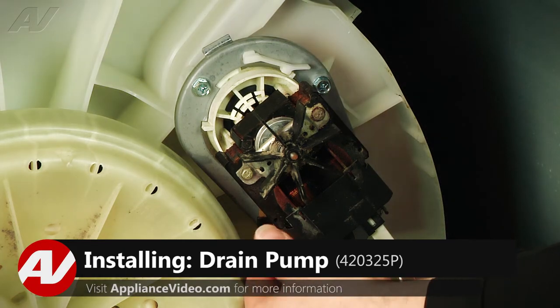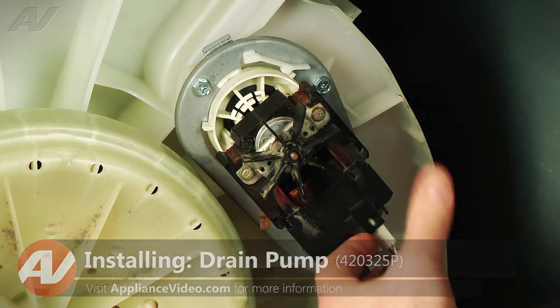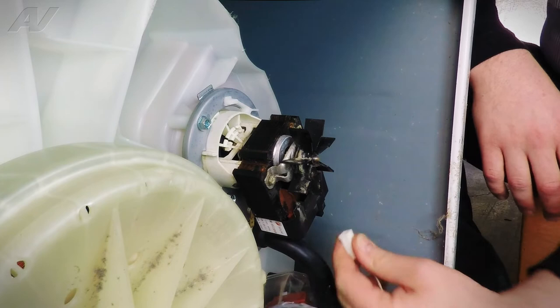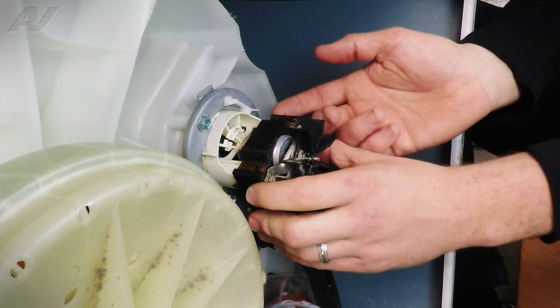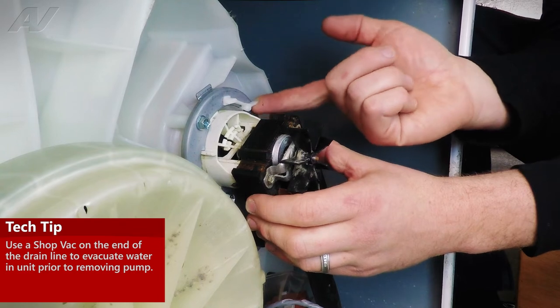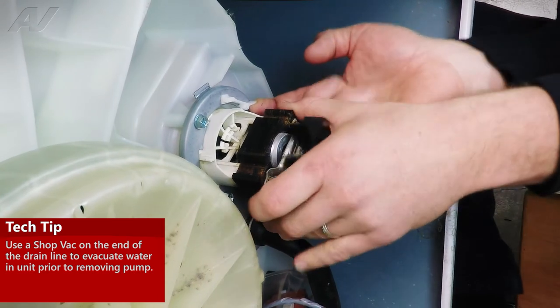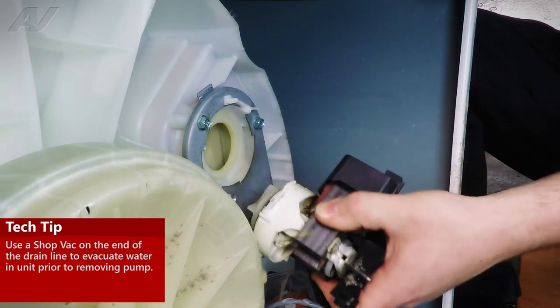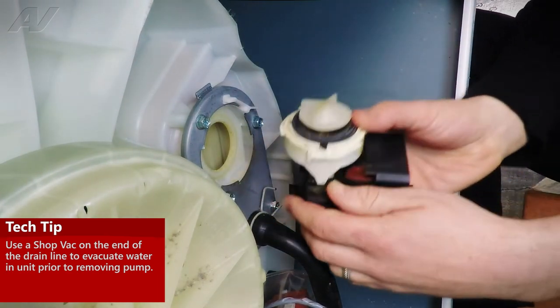So what we'll need to do with power unplugged is remove our harnesses here, our ground wire, and then our drain pump harness over here. They just pull straight off. And then we're going to remove the drain pump. To do that, no tools required, just a tab we're going to pull up on, and we're going to rotate the drain pump counterclockwise, about a quarter of a turn. Now we can remove the drain pump here.